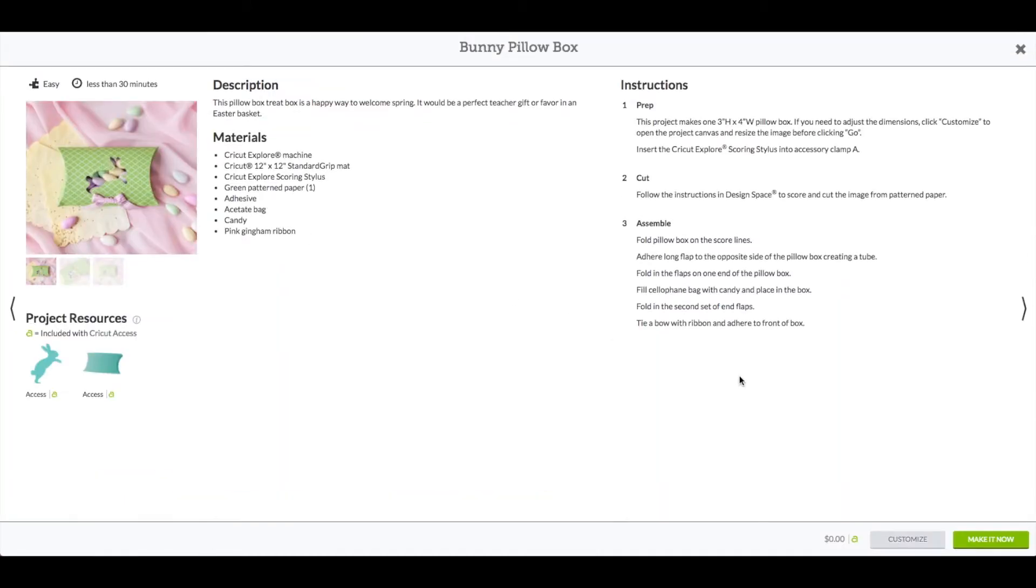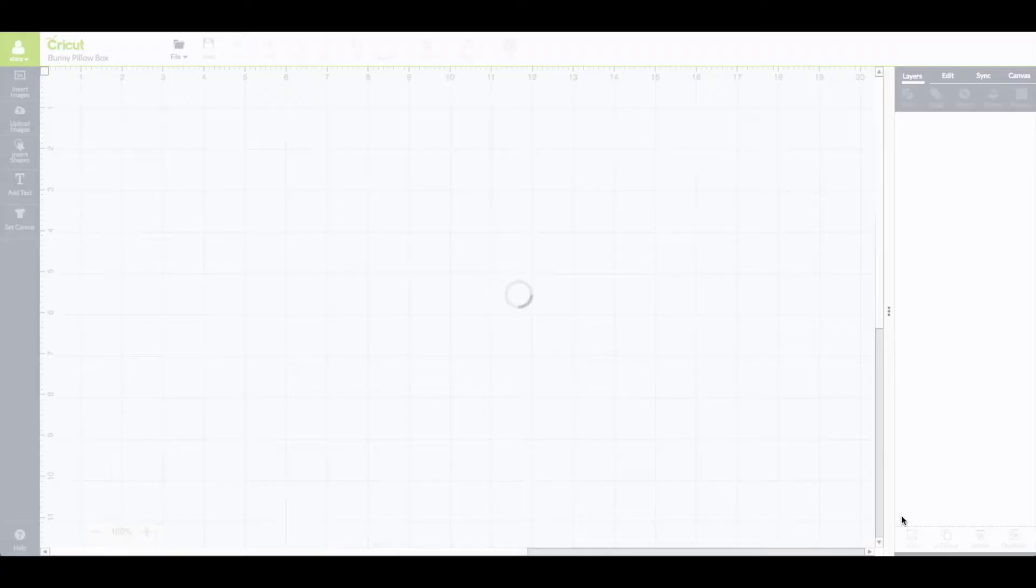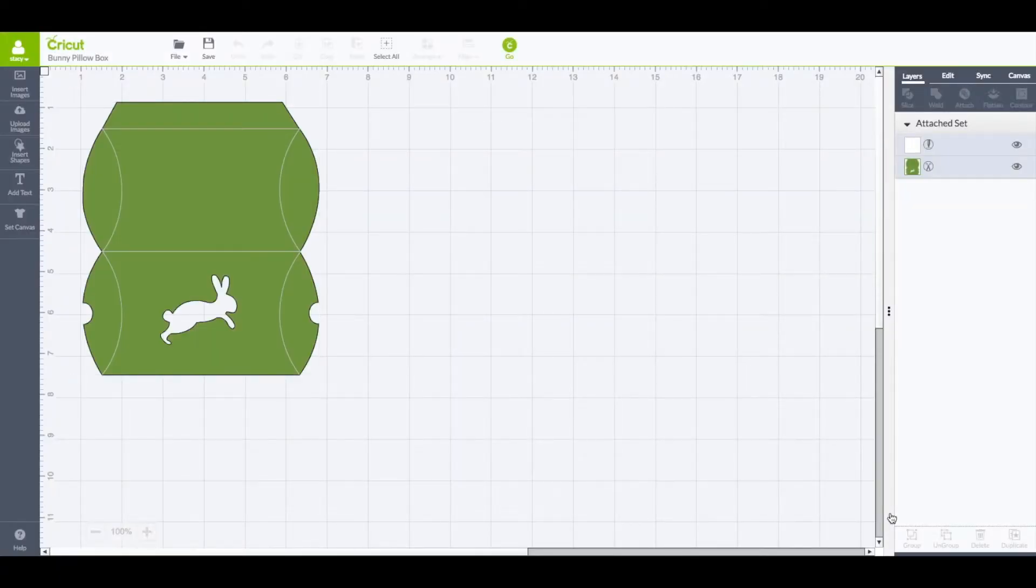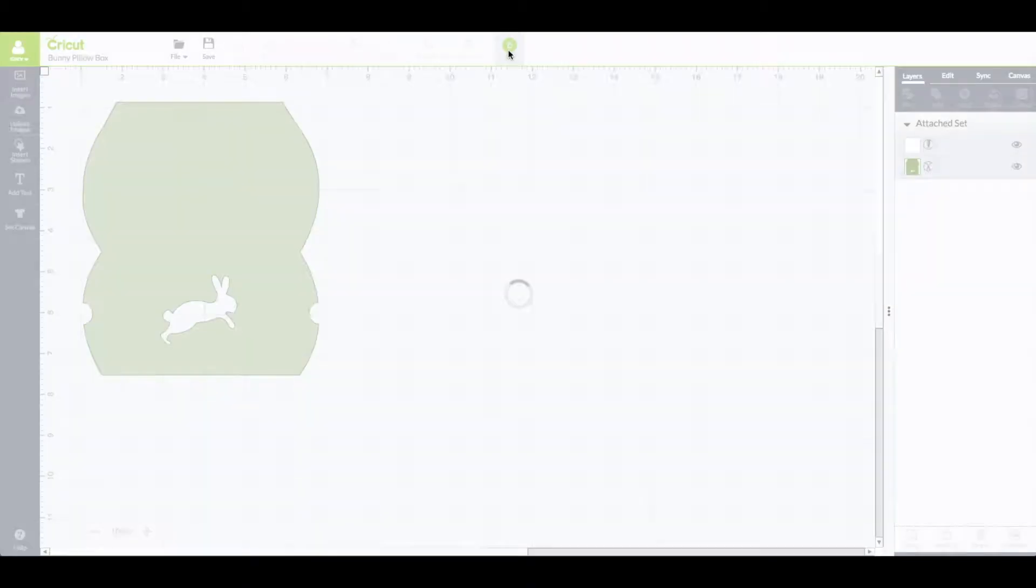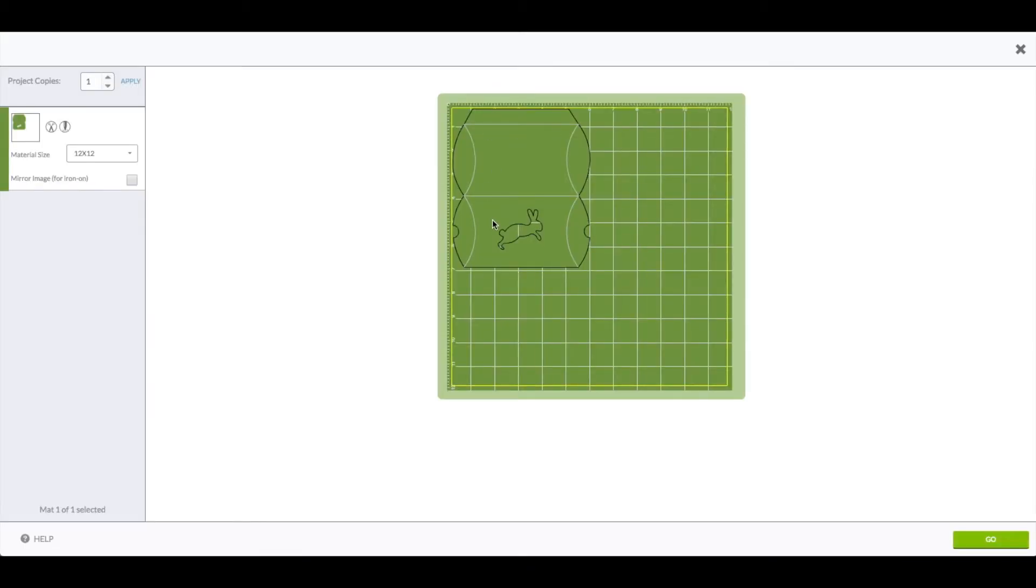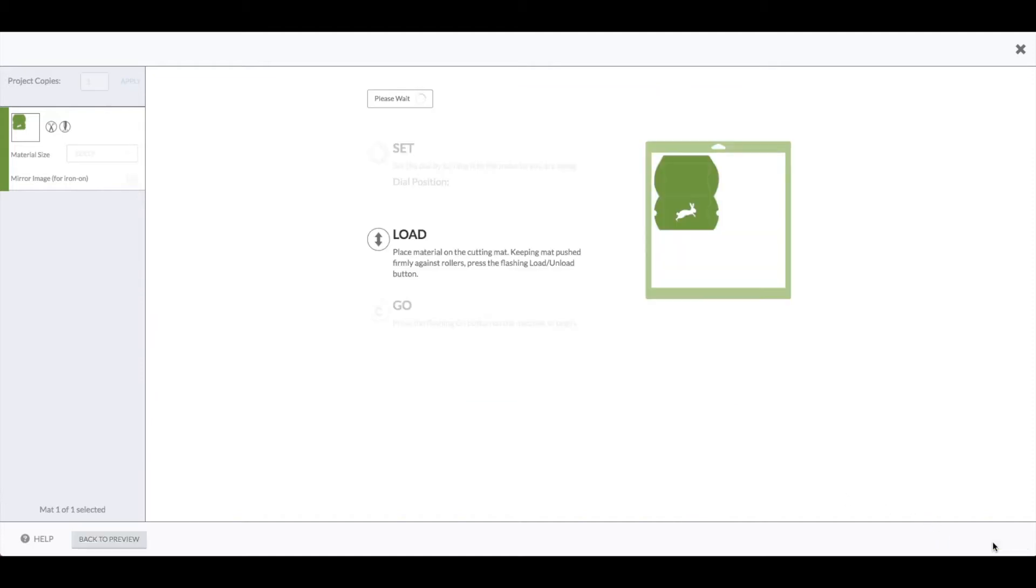This will bring up the preview window. Bottom right, click on customize. I did not change anything with this box. If you want to you can resize it. Top toolbar, go ahead and click on go. That's our box there. Bottom right, click on go. I'm going to cut this out over the table and put our box together.